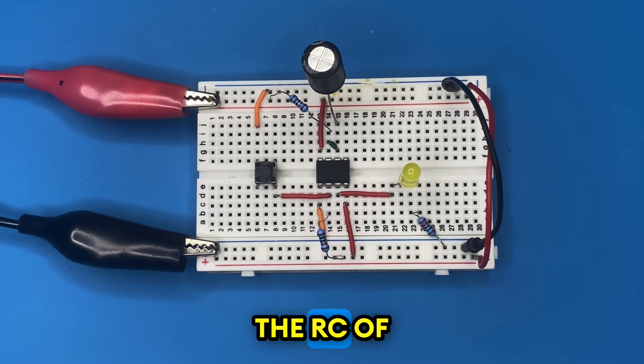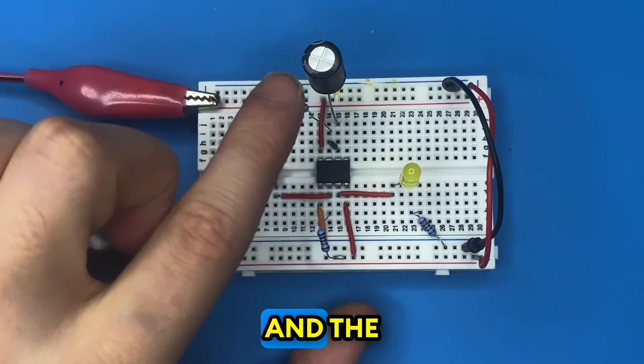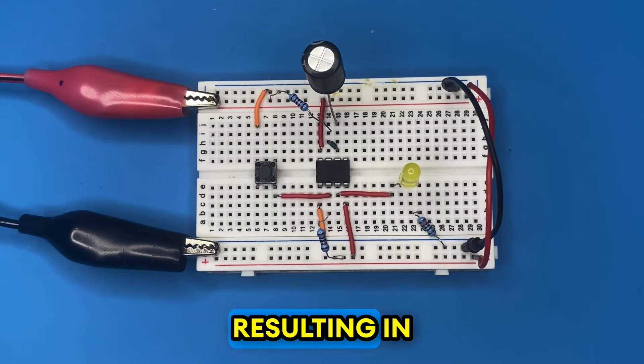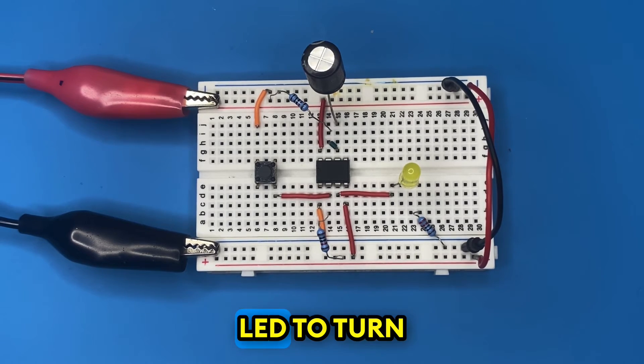We can summarize that the capacitor will take longer to charge through the resistor, resulting in longer time for the LED to turn on after the switch is pressed. Now let's grab another capacitor, now 1000 microfarad.